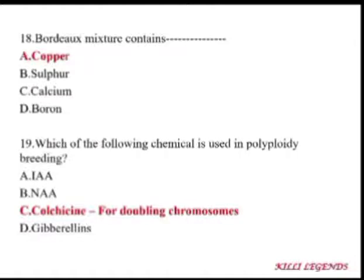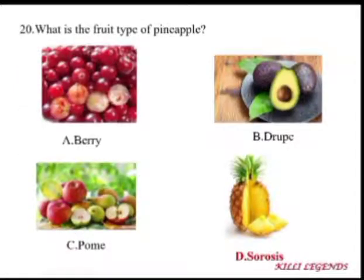Colchicine is used in polyploidy breeding for doubling the chromosomes. NAA and gibberellin are growth regulators. The fruit type of pineapple is sorosis.